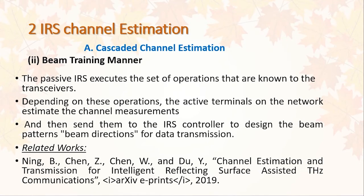The second sub-method for cascaded channel estimation is the beam training manner. Here, the passive IRS executes a set of operations known to both transceivers — the user and the base station. Depending on these operations, the active terminals on the network estimate channel measurements or CSI, and then send them to the IRS controller to design beam patterns or beam directions for data transmission. This manner is based on beam training or beam directions, and we have related works for this method.